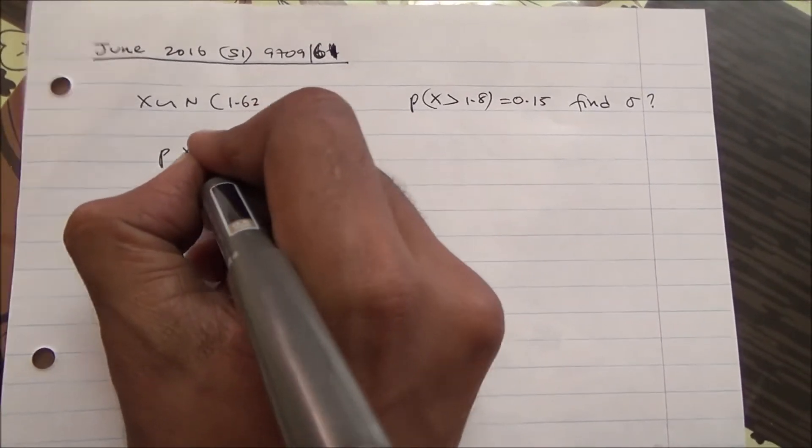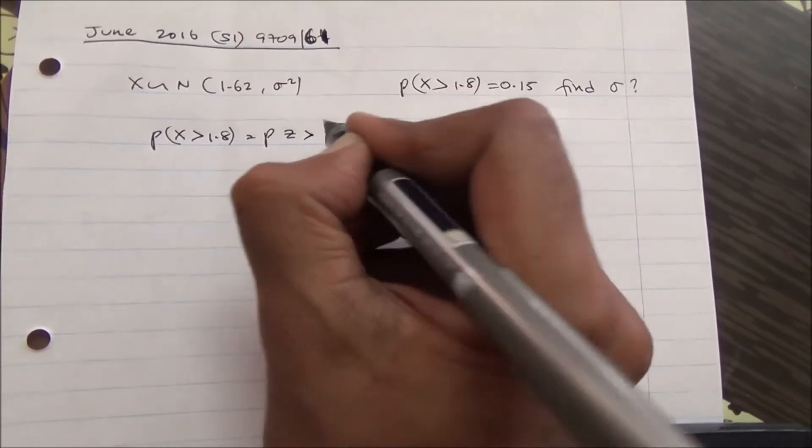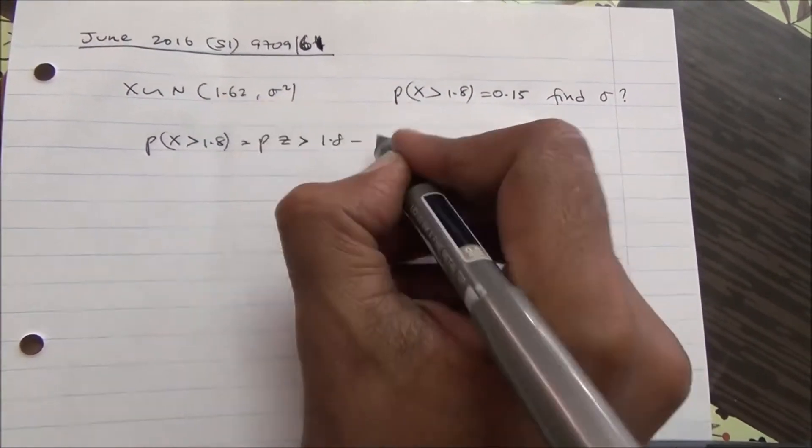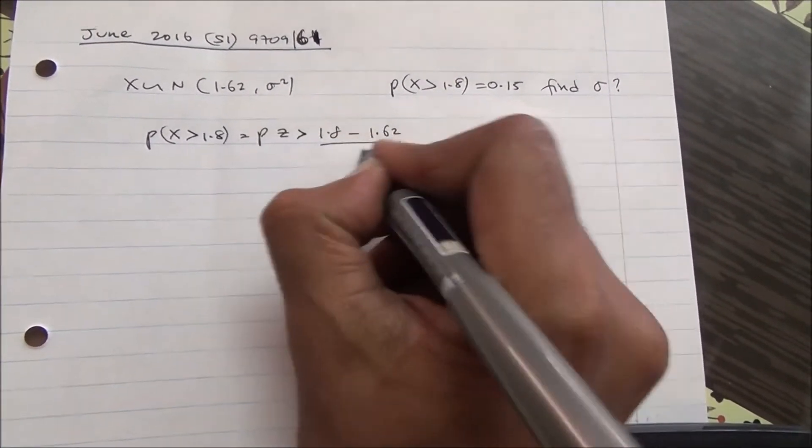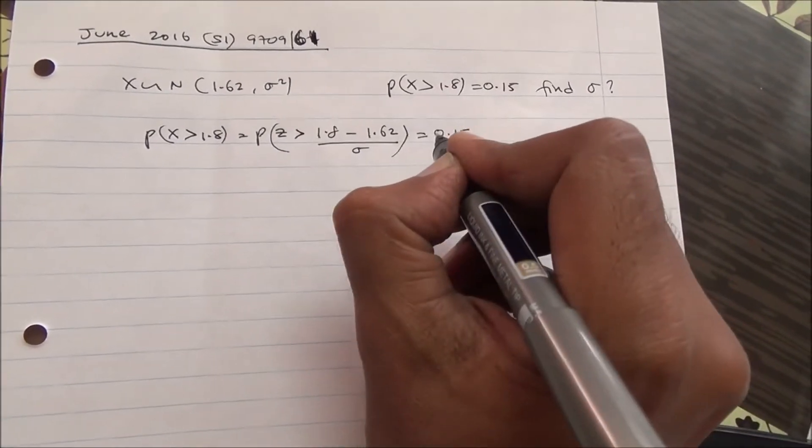So we're going to say probability of X being greater than 1.8 is exactly the same as probability of Z being greater than 1.8 minus the mean 1.62 over the sigma, and all of that's going to be 0.15.